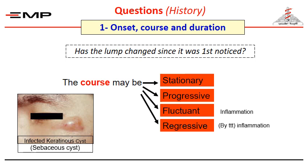Then, when inflammation occurs, the course will be progressive, and if the patient takes antibiotics, the swelling will regress. If the inflammation is recurrent, which is not infrequent, the course will be described as fluctuant.